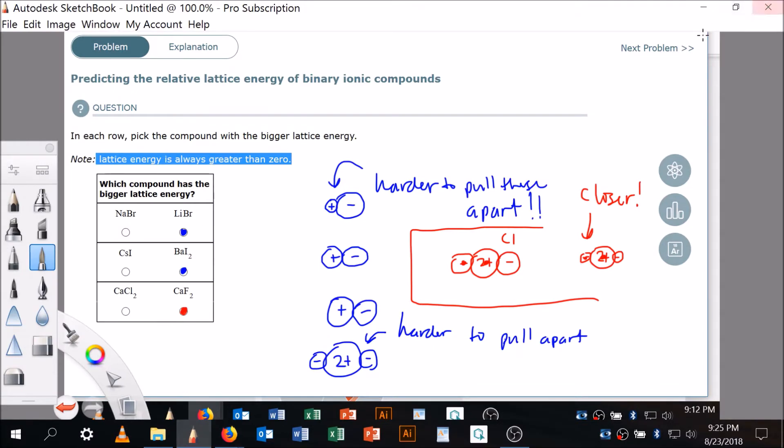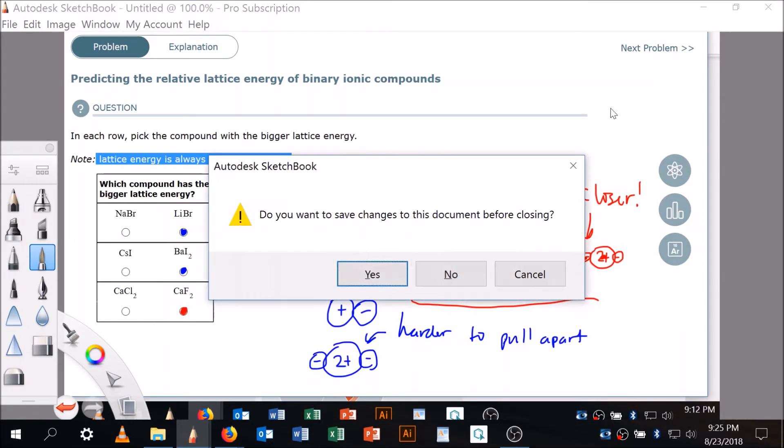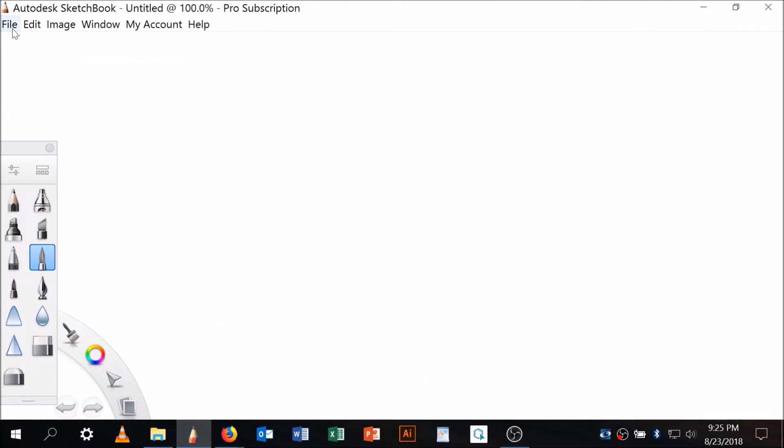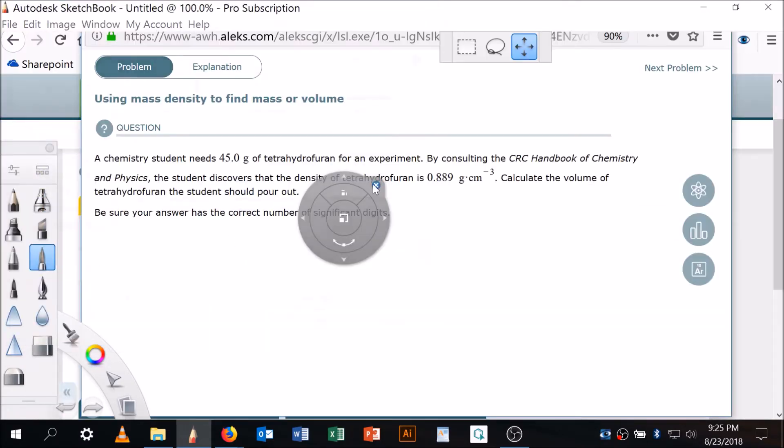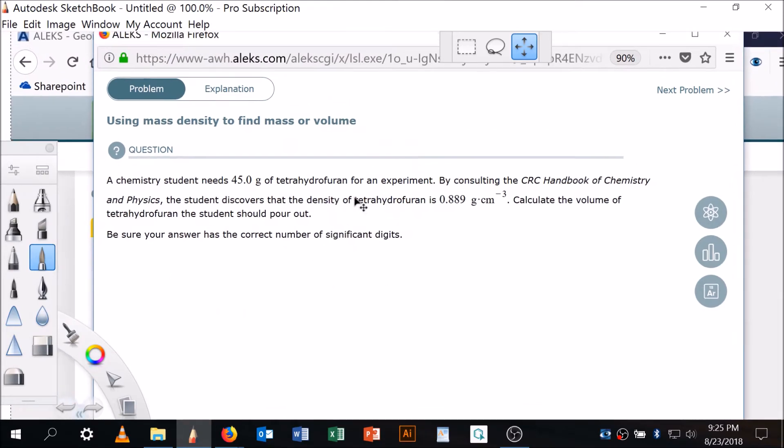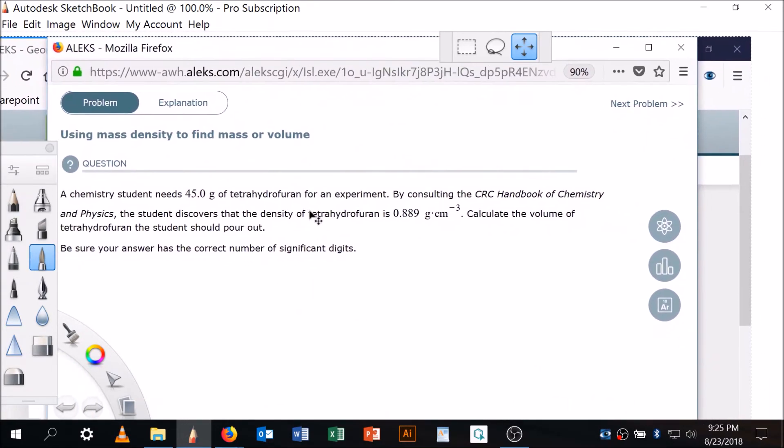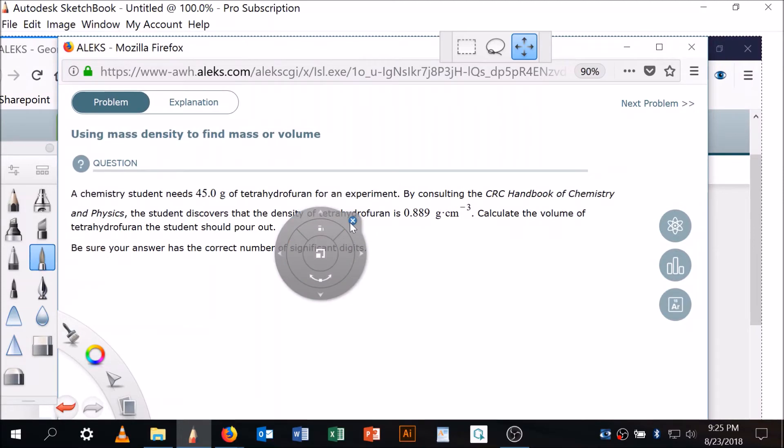Here's my whiteboard. Control-N, New, File, Add image. Using mass density. Okay, so here's what we got.